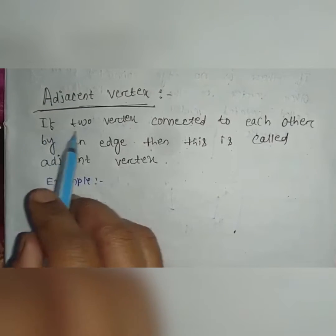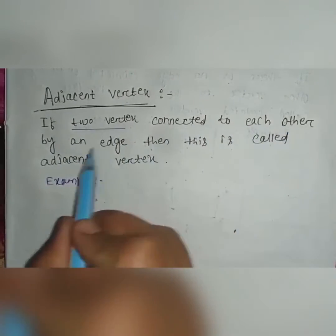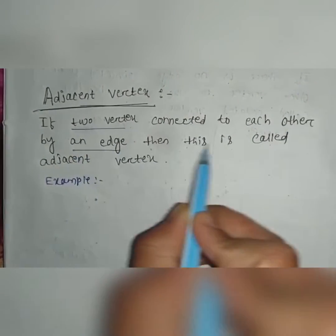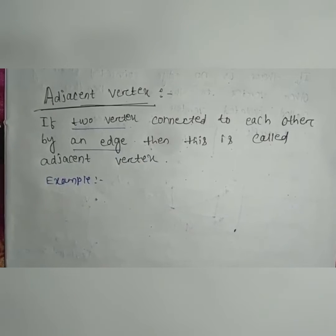If two vertex connected to each other by an edge, then this is called adjacent vertex. What does it mean?